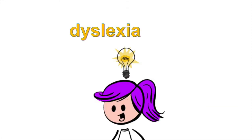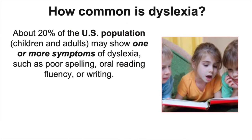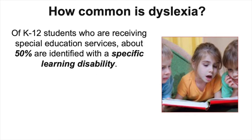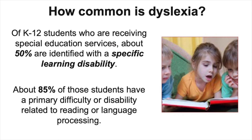Now let's take a similar look at dyslexia. Medical and education researchers estimate that about 20% of the U.S. population, including children and adults, may show one or more symptoms of dyslexia. This does not mean that all of those people have a dyslexia diagnosis — just that they have issues with reading very similar to people who do have a diagnosis. About 50% of K-12 students who receive special education services are identified under the specific learning disability category, and about 85% of those students' primary disability area is reading or language processing. This includes, but isn't only made up of, students with dyslexia.